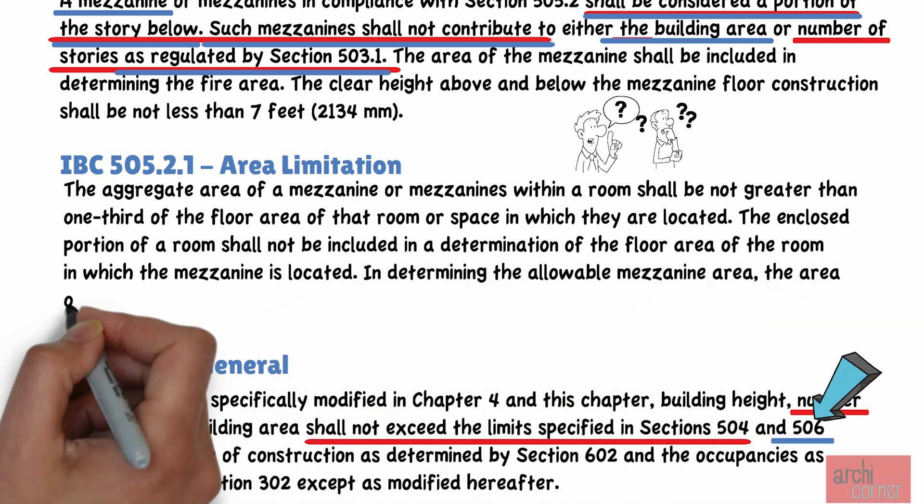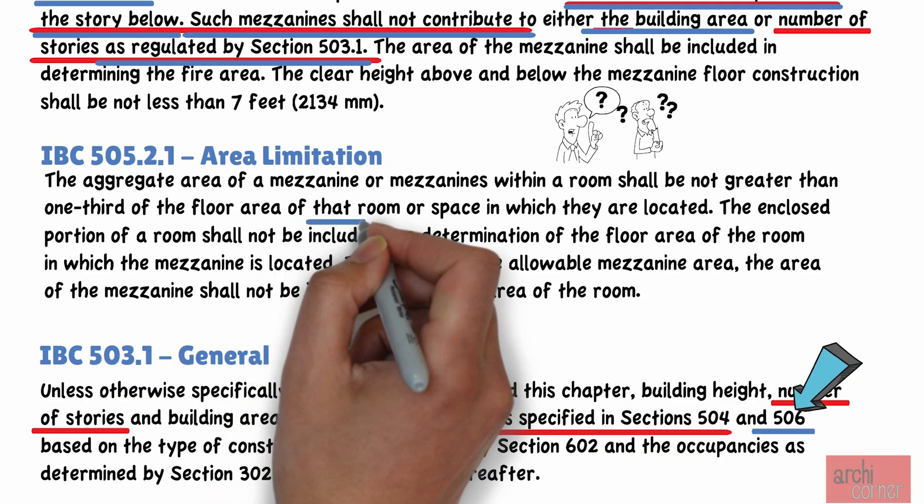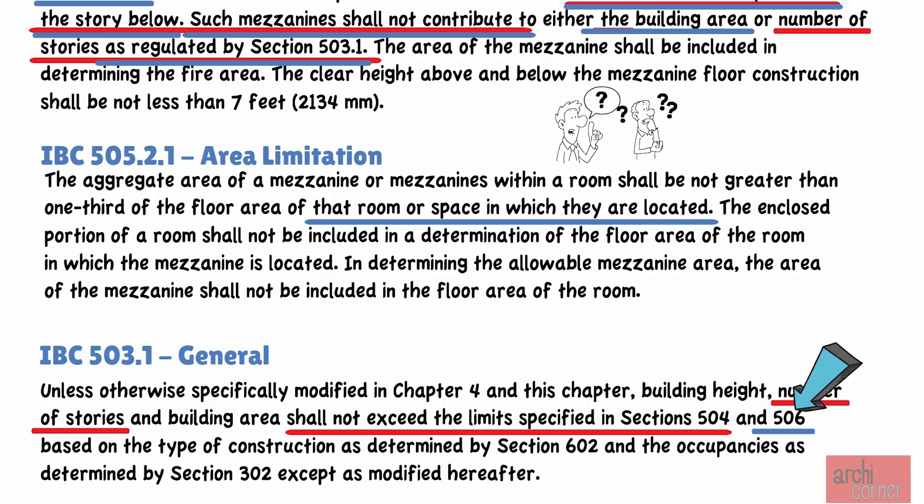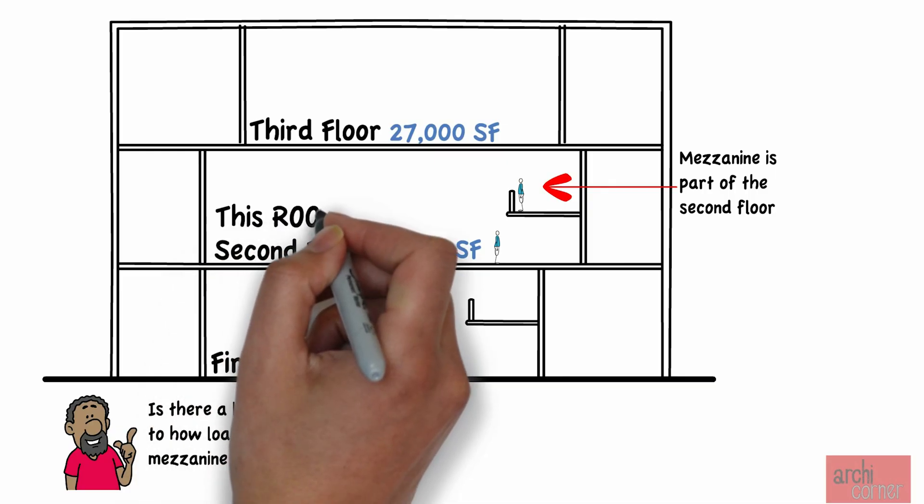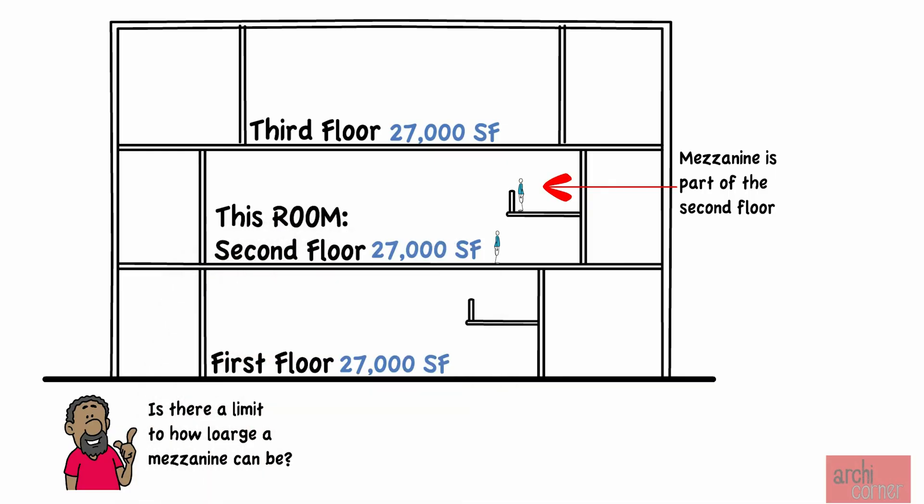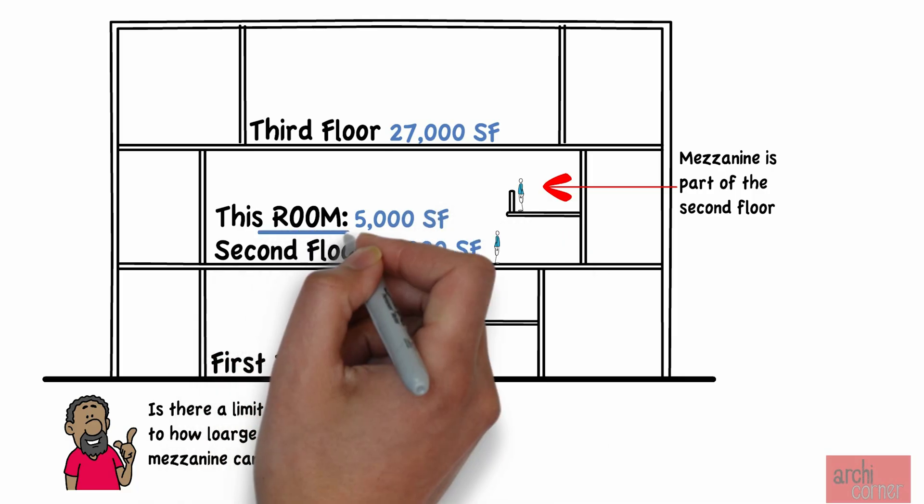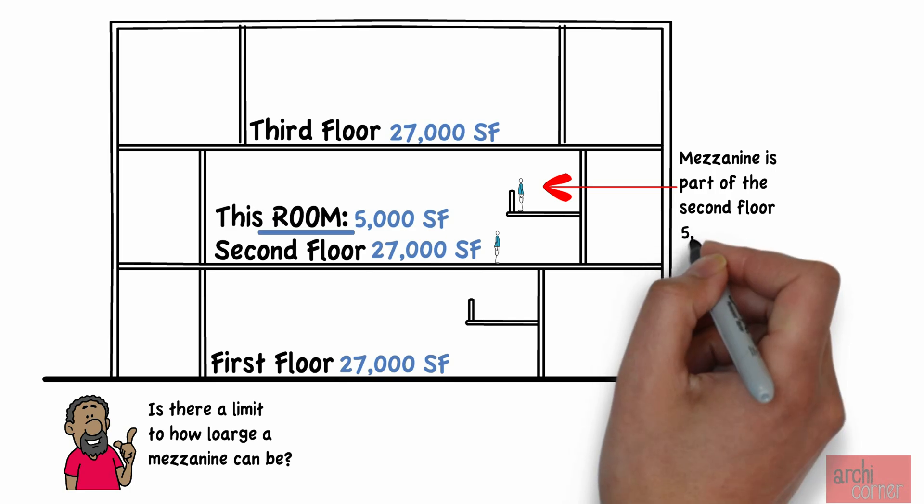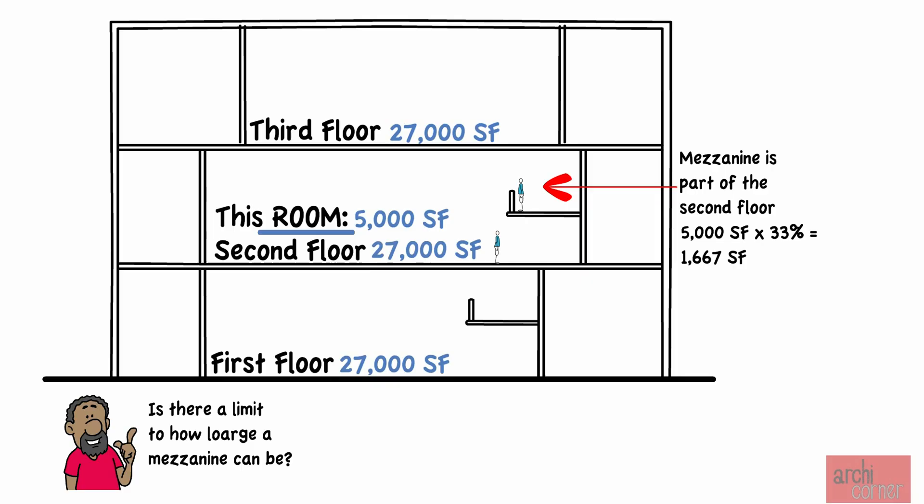So, let's break that down. First, notice that the area of the mezzanine is based on the square footage of the room in which it is located, not the size of the entire area of the story. Let's assume that the size of the room this mezzanine is located in is 5,000 square feet. I emphasize that we are talking about the room, not the entire second floor. In this case, our mezzanine can be 5,000 times 33 percent, which equals 1,667 square feet.